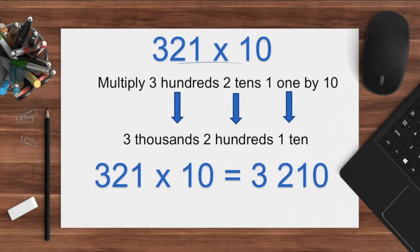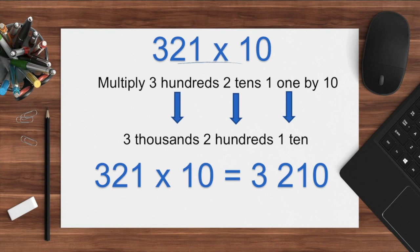Numbers can also be multiplied by 10 easily by looking at the value of each digit. For example, 321 times 10 is the same as multiplying 300 by 10, 20 by 10, and 1 by 10. So the products would be 3000, 200, and 10. Simplifying this: 321 times 10 is equal to 3210.